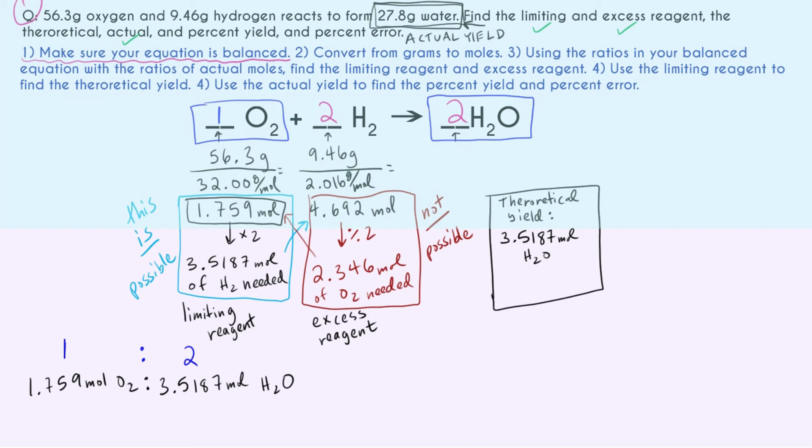Our theoretical yield of water is 3.5187 moles. But most classes are not going to let you give the theoretical yield in mole. They're going to request it in mass. So let's go ahead and convert this to grams. For that, we're going to need the molar mass of water. And we can go ahead and multiply it by the number of moles of water that we know we could make in a perfect scenario. So our moles cancels out. And we end up with 63.37 grams. This is our theoretical yield in the form that your teacher most likely wants it in.